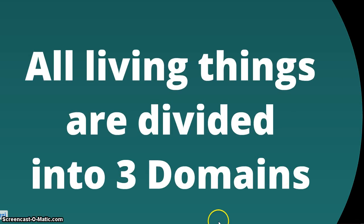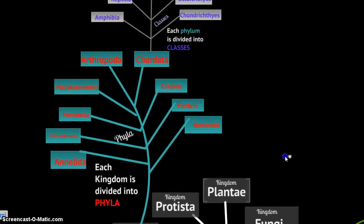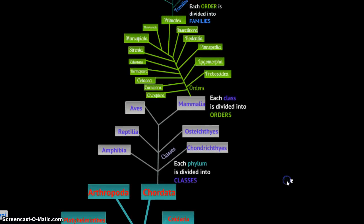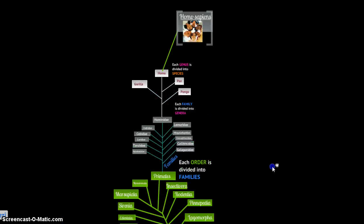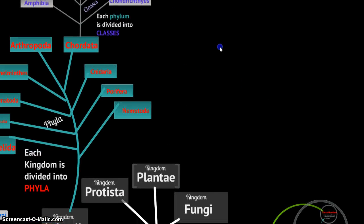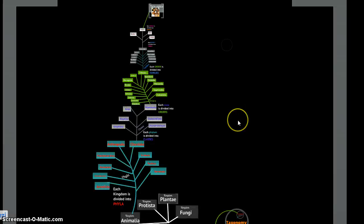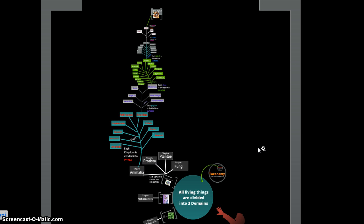Looking at the entire classification system, consider how incredibly complicated this web could be if you followed each branch into its numerous sub-branches. Keep in mind we were only classifying a single organism here — us as people. This is a very complex classification system, but it allows us to group organisms based on their common traits and characteristics. That is an overview of taxonomy and the system of classification used in biology.